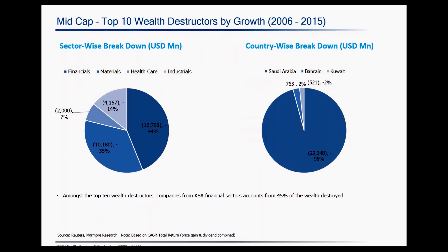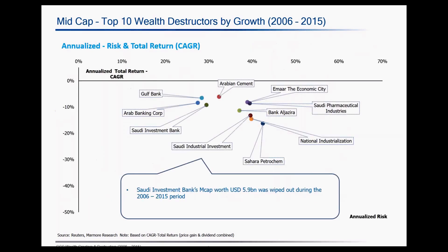This is the sector and country-wise breakdown of the top 10 wealth destructors by growth for the mid-cap segment. The financial services sector dominates the space — almost 44% of the companies that destroyed wealth belong to the financial services sector. Saudi Arabia again leads, as most of the companies that have destroyed wealth are from Saudi Arabia, accounting for close to about 29 billion in wealth destroyed.